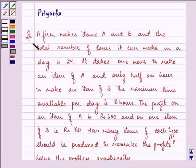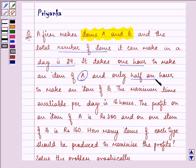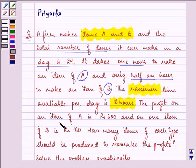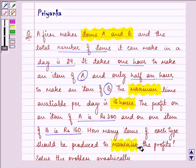Hi and how are you all today? The question says, a firm makes item A and B and the total number of items it can make in a day is 24. It takes 1 hour to make an item of A and only half an hour to make an item of B. The maximum time available per day is 16 hours. The profit on item A is 300 and on one item of B is 160. How many items of each type should be produced to maximize the profits?